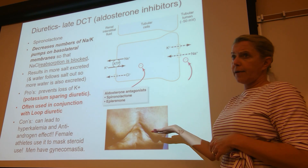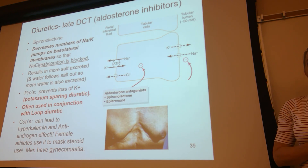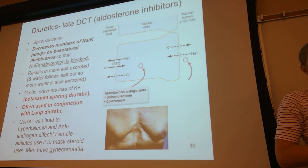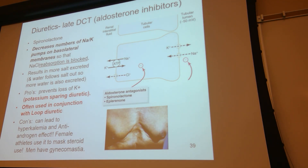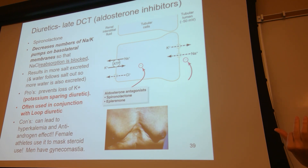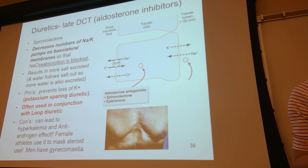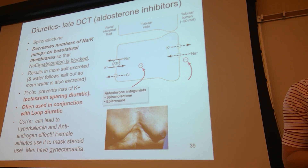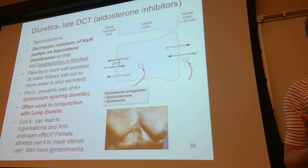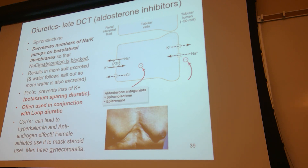There is a nasty side effect — gynecomastia, or man boobs. Because spironolactone is a steroid, it can also block androgen receptors, the receptors that respond to testosterone. If you block the testosterone receptor, estrogen gains more control in that person's body, so a man might develop gynecomastia — breast tissue. Many female athletes using anabolic steroids might take spironolactone to offset the masculinization effects, to be less suspicious.